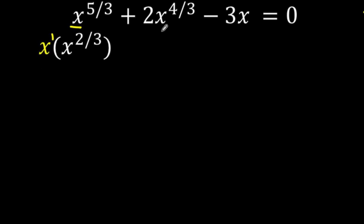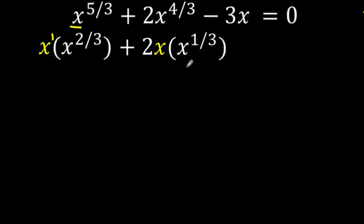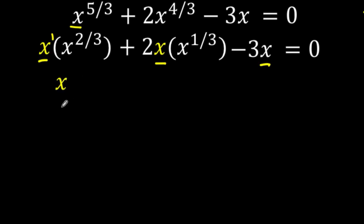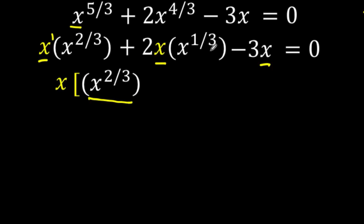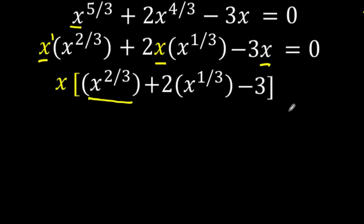Let's do the same for 2x raised to 4 over 3. We can rewrite this as 2 and split x to the 4 thirds as x times x raised to 1 third. Then we just copy minus 3x equals 0. Notice now that x is common among the three terms, so factoring out this common factor x, we get x times the expression: x raised to 2 thirds, plus 2 times x raised to 1 third, minus 3, equals 0.